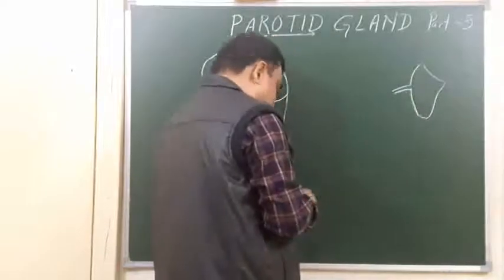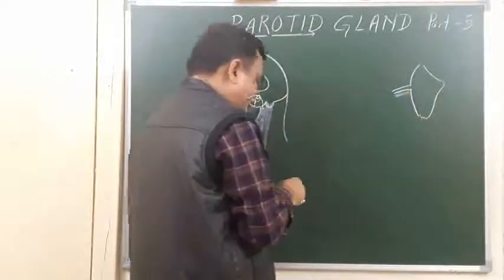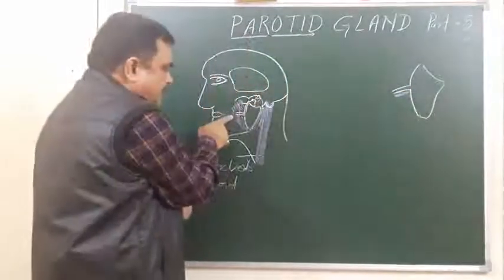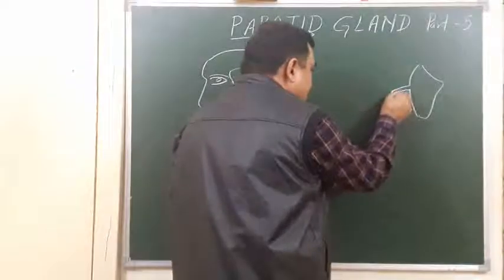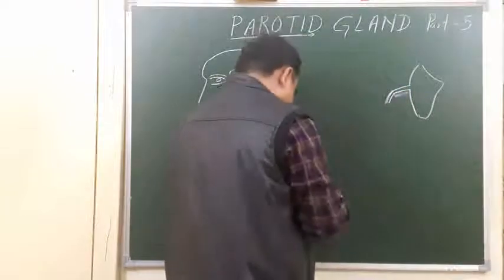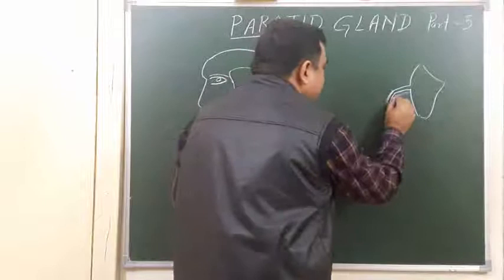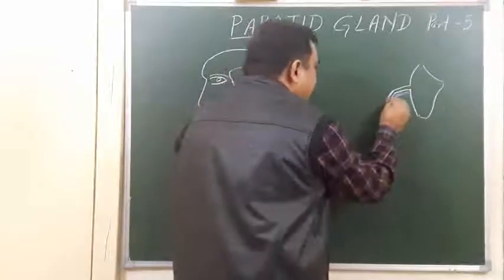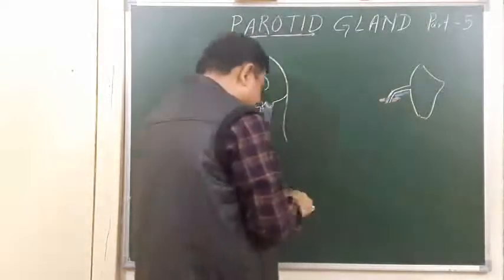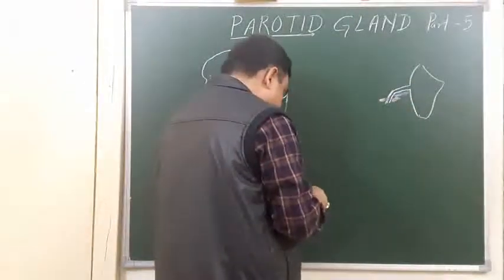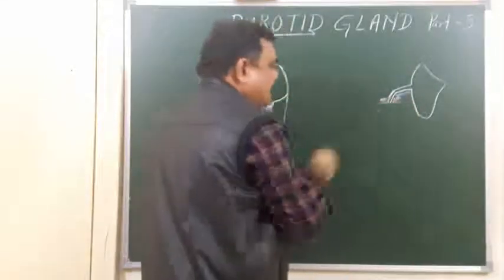In the schematic diagram, here is the position of the masseter. The duct passes over the masseter, then at the anterior border of the masseter it turns. It then pierces the buccal pad of fat — here is the buccal pad of fat — and then it pierces the buccopharyngeal fascia.